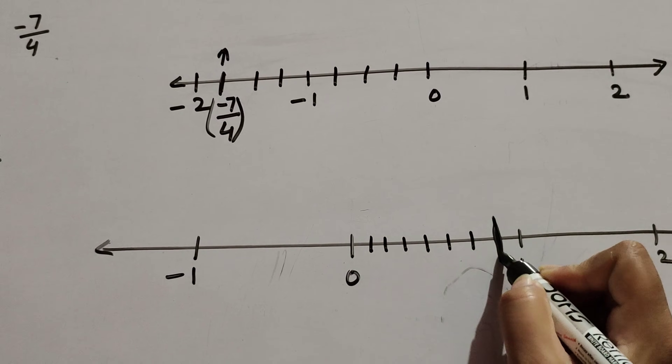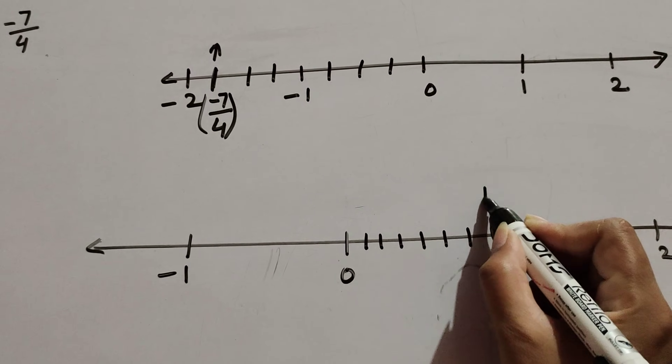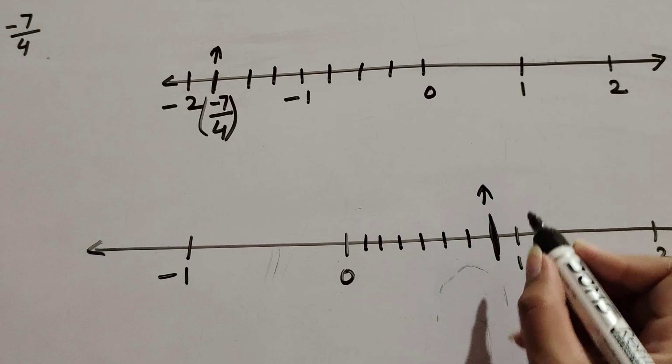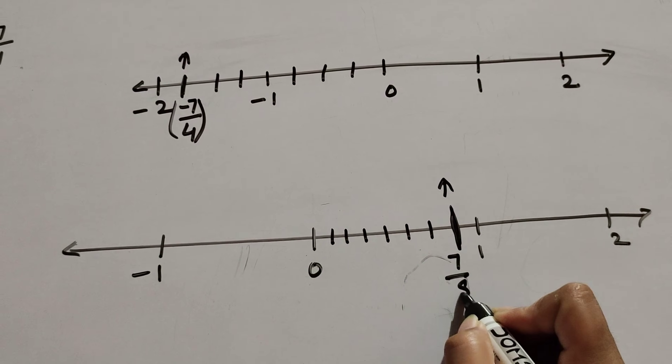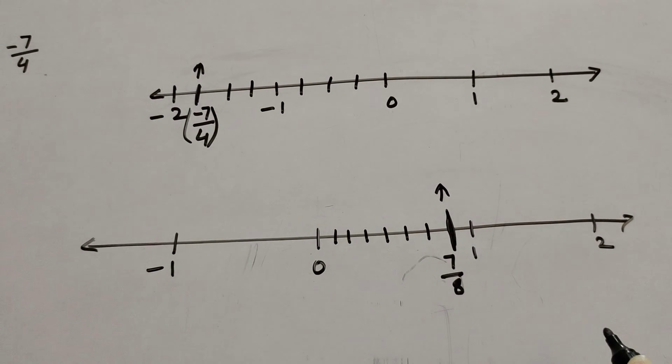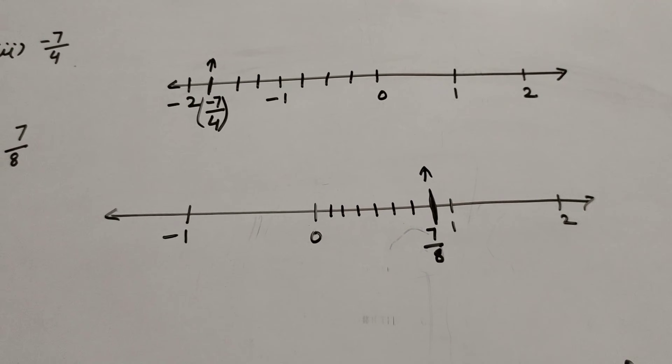We have the number seven over eight and this line represents the rational number seven over eight.